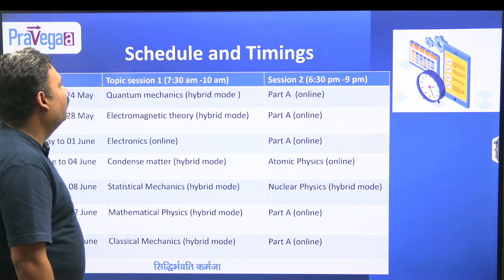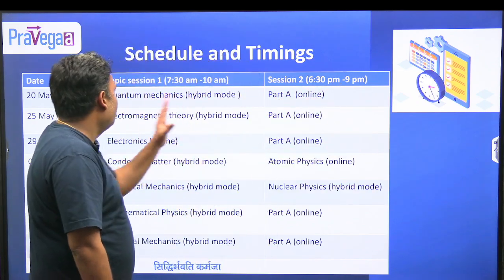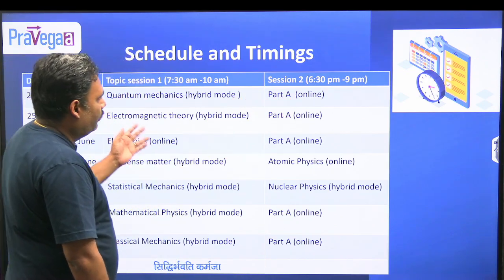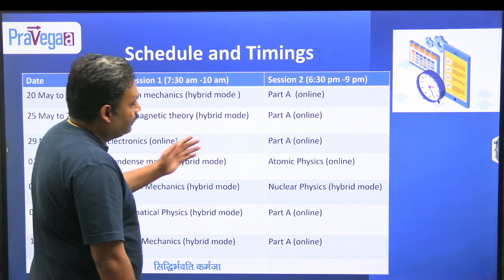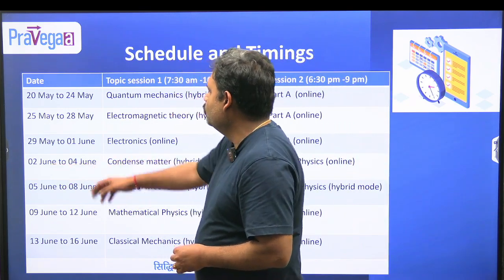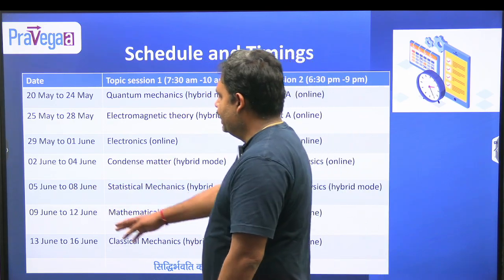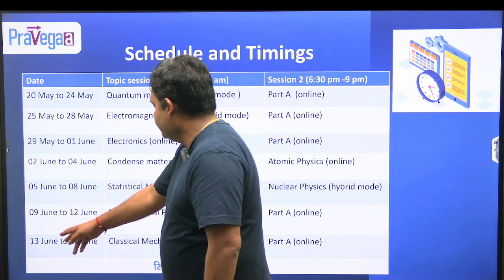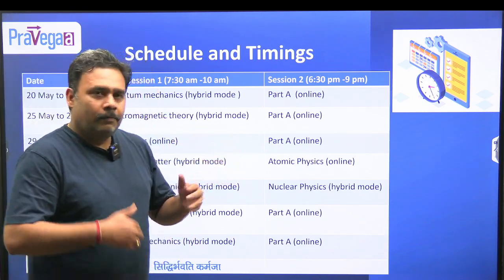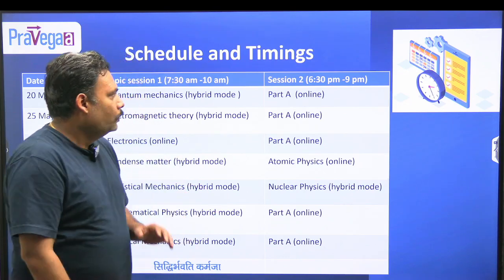The morning session will start from 7:30 a.m. to 10 a.m., and the evening session will run from 6:30 to 9 p.m. From May 20 to 24 we have Quantum Mechanics and Part A; May 25 to 28 Electromagnetic Theory and Part A; May 29 to June 1 Electronics and Part A. June 2 to 4 Condensed Matter and Atomic Physics; June 5 to 8 Statistical Mechanics and Nuclear Physics; June 9 to 12 Mathematical Physics and Part A; June 13 to 16 Classical Mechanics and Part A. We have given a lot of emphasis on Part A this time, as students generally prepare it only at the last moment — we have fully integrated it into the schedule.